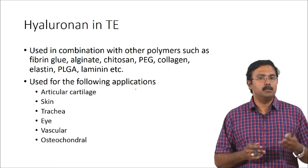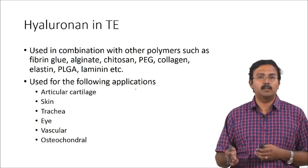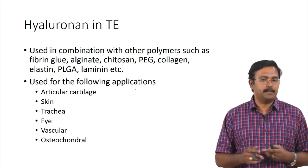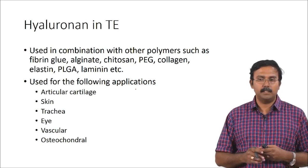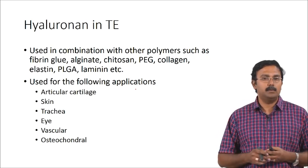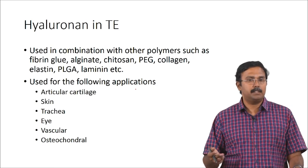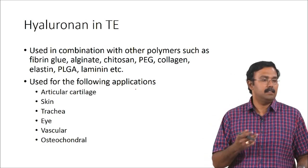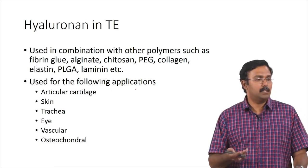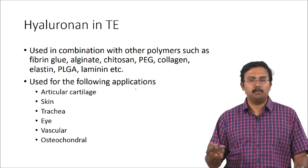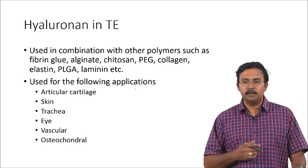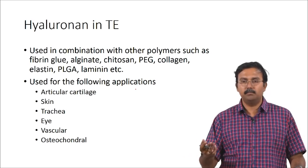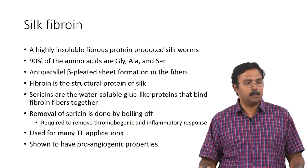HA is just a component along with others, and it has been shown to be effective for cartilage, skin, trachea, eye, vascular applications, and osteochondral applications. It has been shown to be reasonably effective for these things as a blend or in combination with other polymers. So those are the polysaccharides. The other class I mentioned is proteins — I am not going to go into collagen, elastin, laminin which we dealt with in reasonable detail as part of extracellular matrix. We will talk about other proteins which are used.